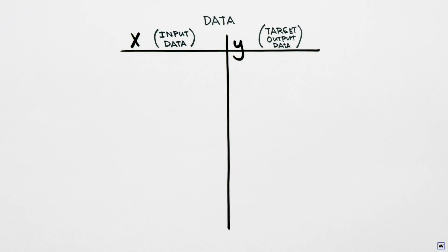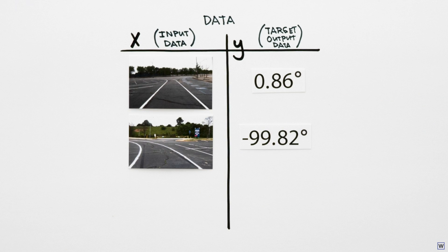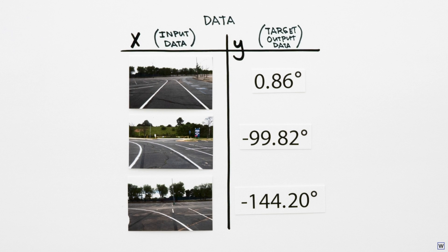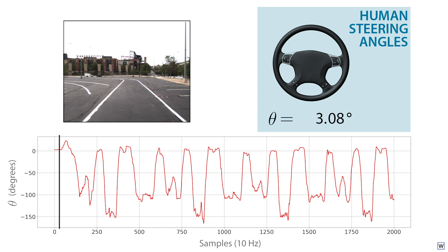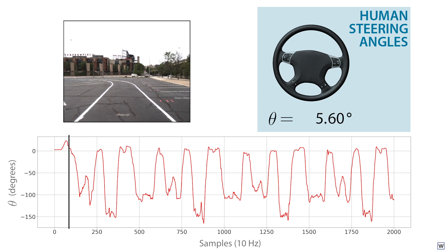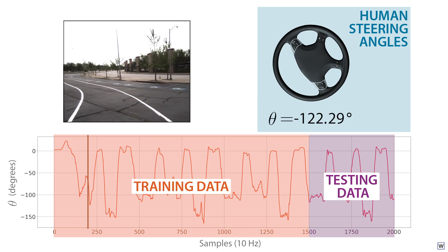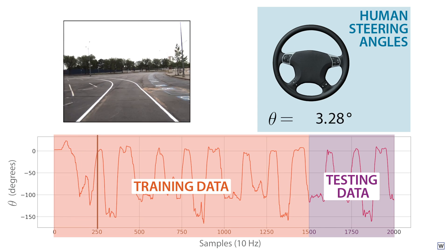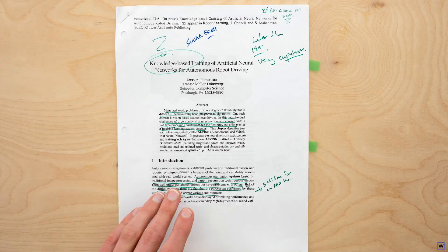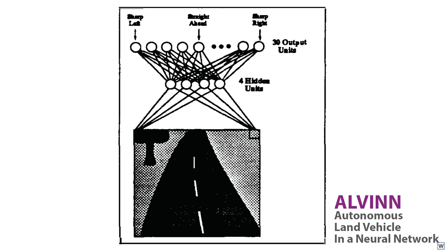As Dean mentioned, his approach calls for supervised learning, which means that we need both input images and the corresponding steering angles from a human driver to learn from. We'll use a few human-driven laps of test-track data to train our neural network, and save one lap to test our algorithm's performance. We'll make use of Dean's ALVIN neural network architecture.